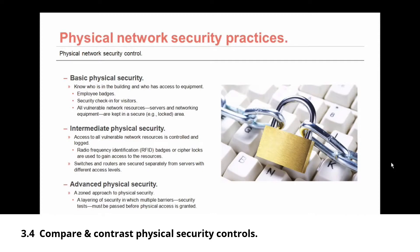Then there's intermediate physical security, where access to all vulnerable network resources is controlled and logged. One way to implement this is to use RFID badges to gain access to network resources, or you could implement cipher locks that require people to punch in a code to unlock the door. Another step in intermediate physical security is the separation of resources — switches and routers are secured separately from servers, with different access levels for each.